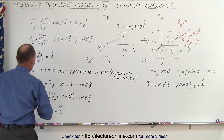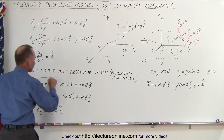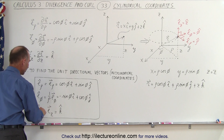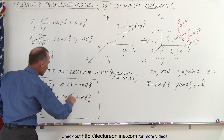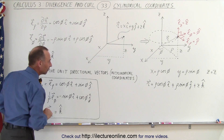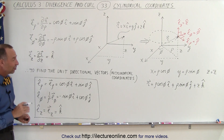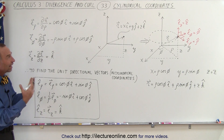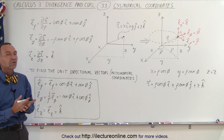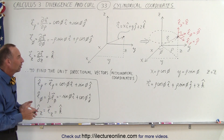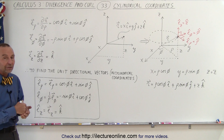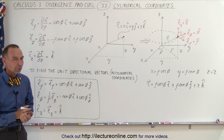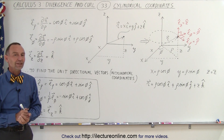So now these are the unit vectors in cylindrical coordinates in the rho, phi, and z directions — very different from i, j, and k, except for the z direction. That gives us a nice review of cylindrical coordinates so we can use this information to figure out how to find the curl and the divergence of vector fields in cylindrical coordinates. And that's how it's done.